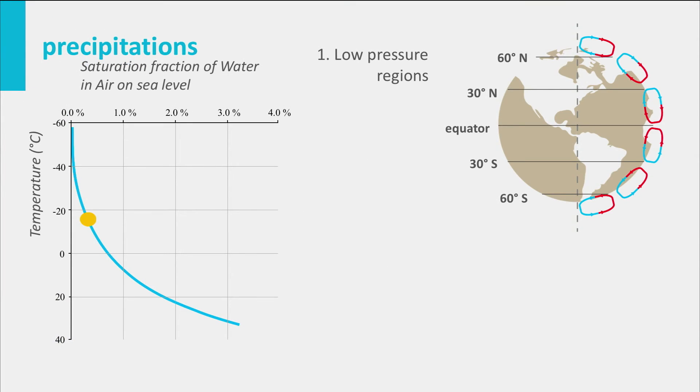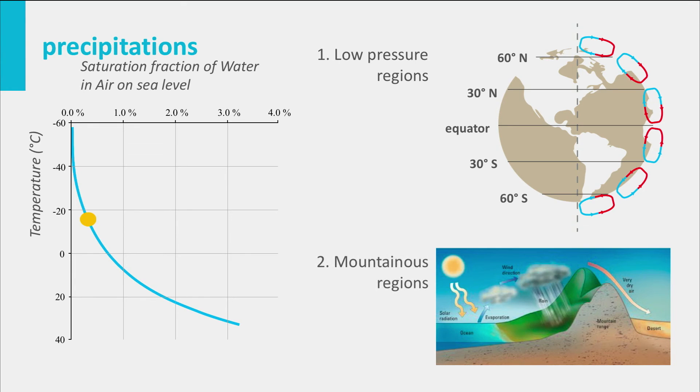In areas of low pressure and in mountainous regions, where winds coming from the sea are obliged by the mountain range to move upward, discharging water on one side and resulting in dry conditions on the other.